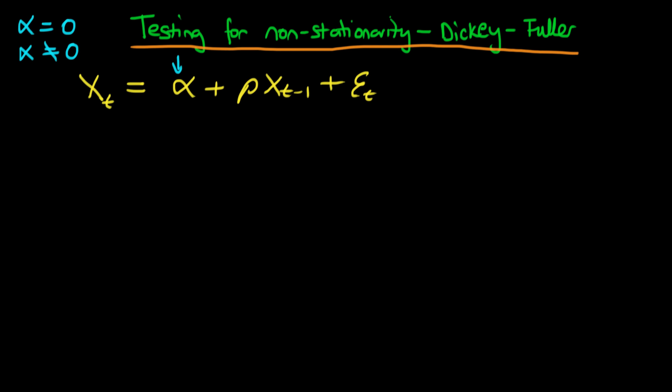The null hypothesis here is that rho equals 1, because if rho equals 1 we have a non-stationary time series. The alternative hypothesis is that rho is less than 1, because if rho is less than 1, we've already proved that our AR process is stationary.